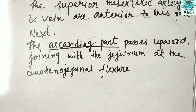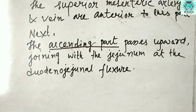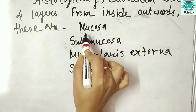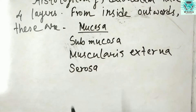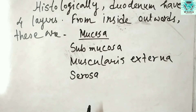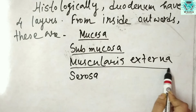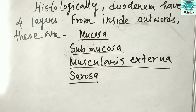There are different types of cells and glands present in the duodenum. Histologically, the duodenum has four layers, as do the jejunum and ileum. From inside to outwards, the layers are: mucosa, submucosa, muscularis externa, and serosa. Both Brunner's glands and goblet cells in the duodenum secrete mucus.